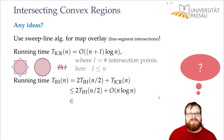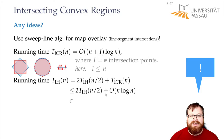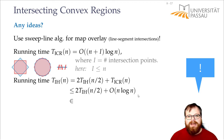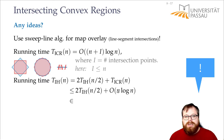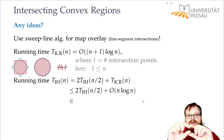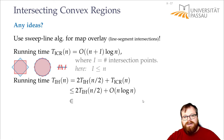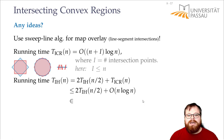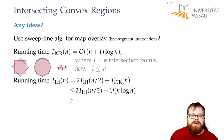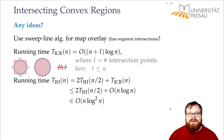We can solve this recurrence using the second case of the master theorem, or by expanding the recursion tree. At the top level we spend O(n log n). At the second level: 2 × O((n/2) log(n/2)) = O(n log(n/2)) = O(n(log n − log 2)) = O(n log n). At the next level: 4 × O((n/4) log(n/4)) = O(n(log n − log 4)) = O(n log n). Every level gives O(n log n), and there are log n levels until the base case, giving O(n log² n) total.